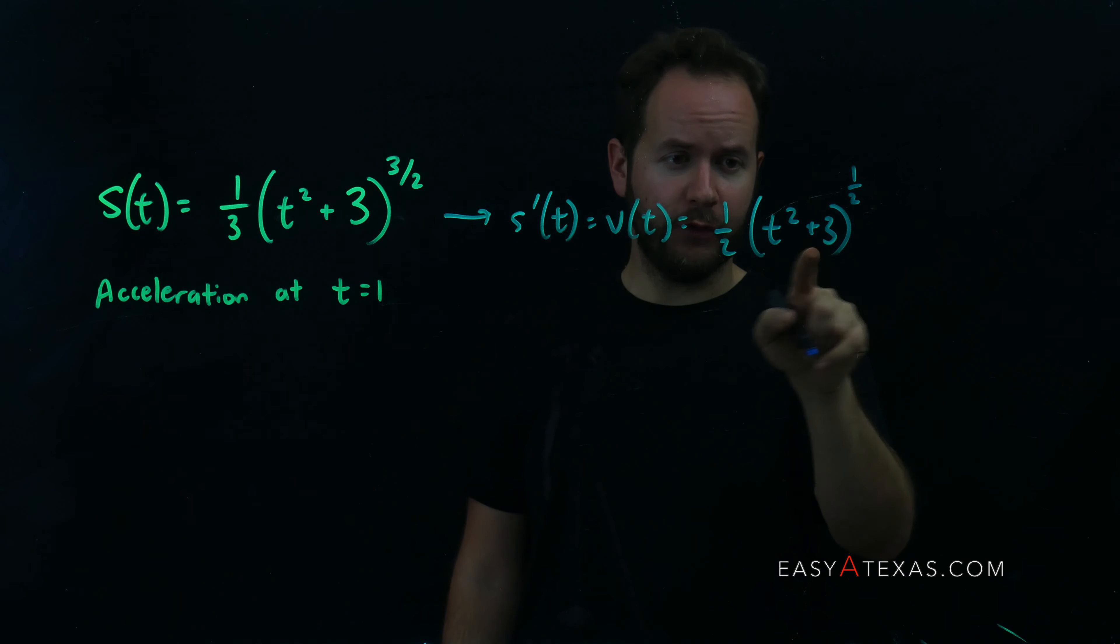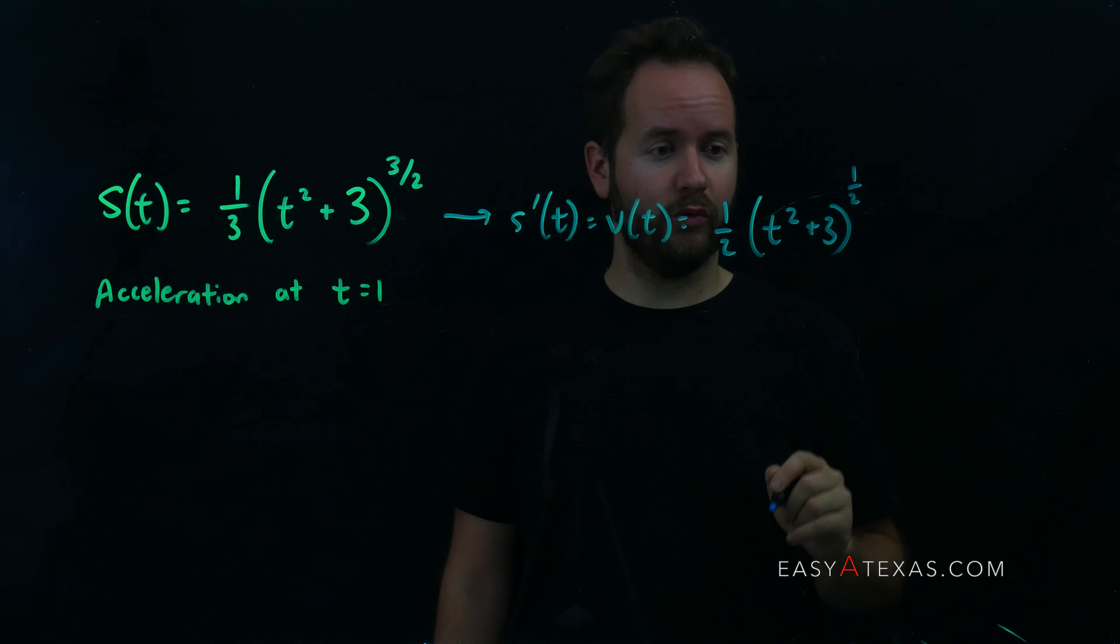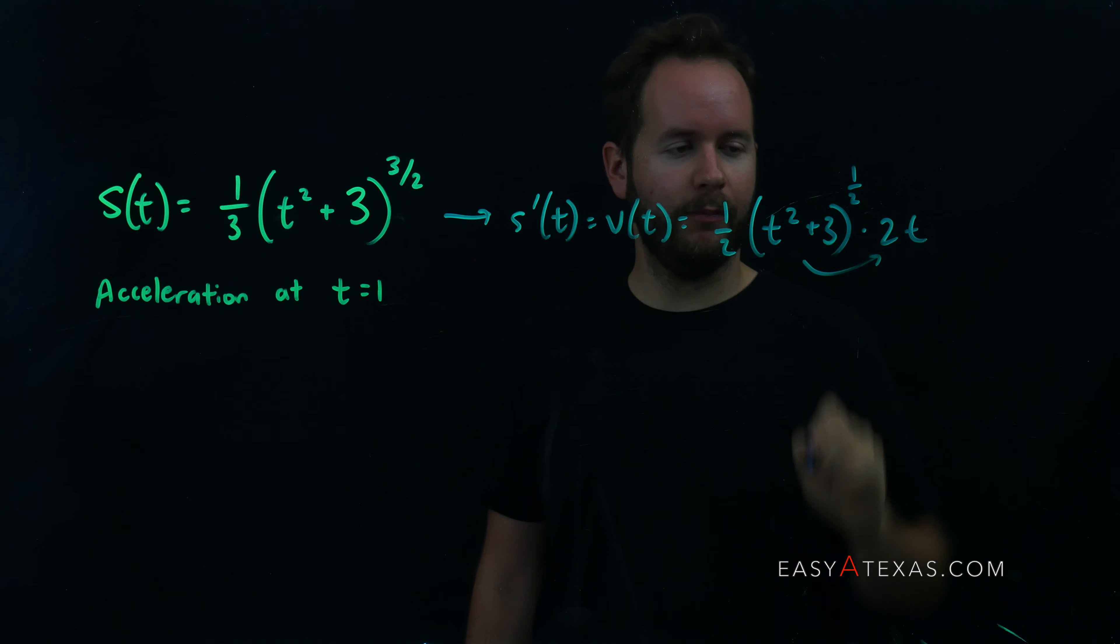Don't forget the chain rule is at play. The derivative of the inside function, the derivative of this t squared plus three is two t, so a two t will pop out.